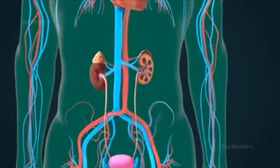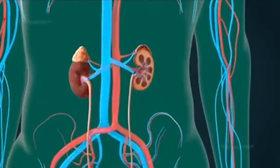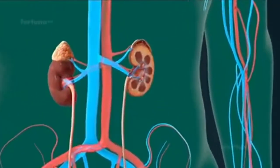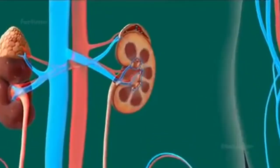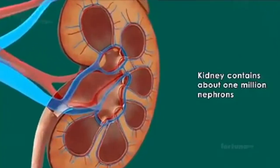Nephrons are the functional units of the kidney. Not only are they responsible for eliminating waste products from your body through the formation of urine. A human kidney contains about 1 million nephrons.